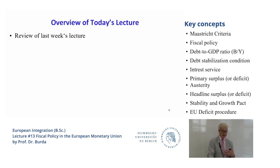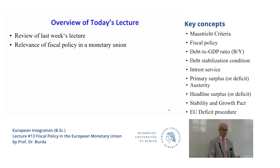Today we're going to briefly review last week's lecture and speak again about the relevance of fiscal policy in the monetary union. We've talked about the fact that giving up your monetary tool — which some countries don't want to do for nationalistic reasons, policy reasons, or preferences over inflation — means that fiscal policy has to do double duty. It has to be able to react quickly and effectively. In a small open economy, the multiplier is lower, so the scope for fiscal policy is limited anyway.